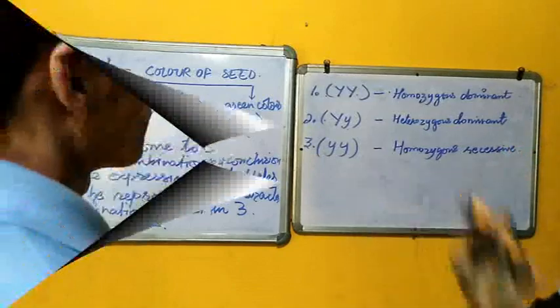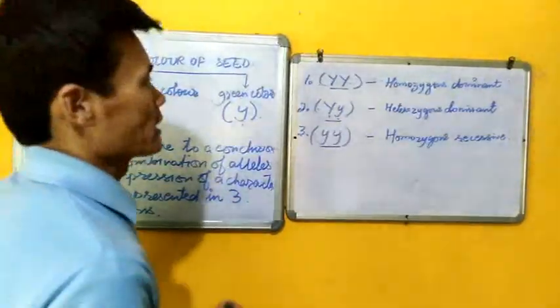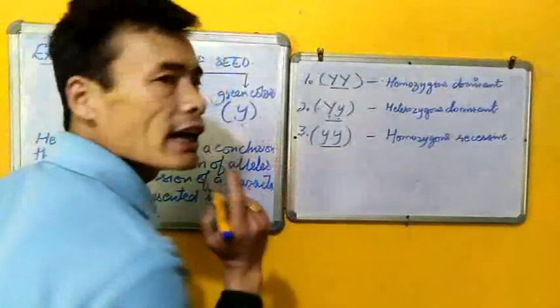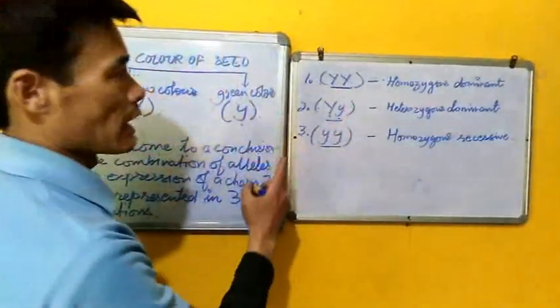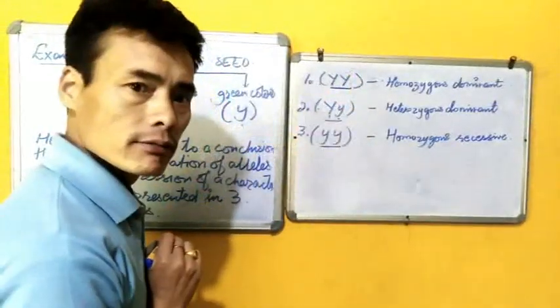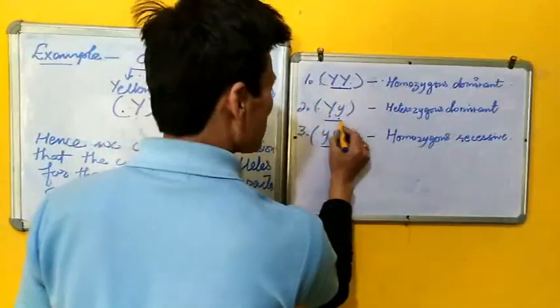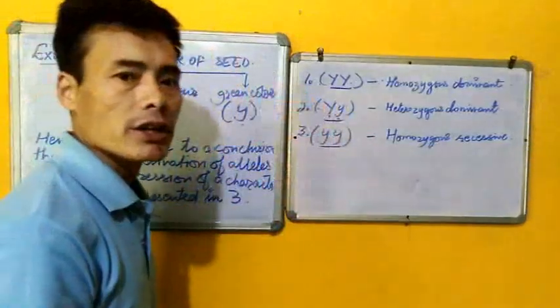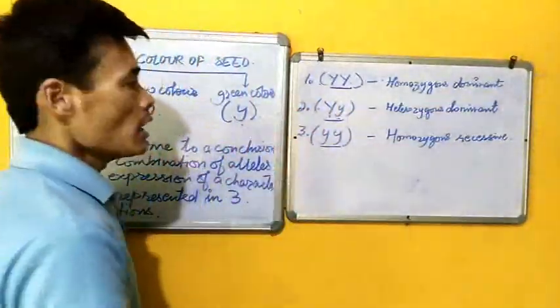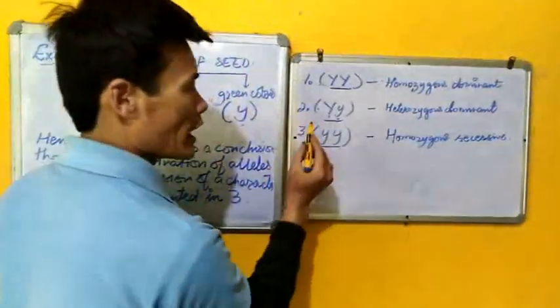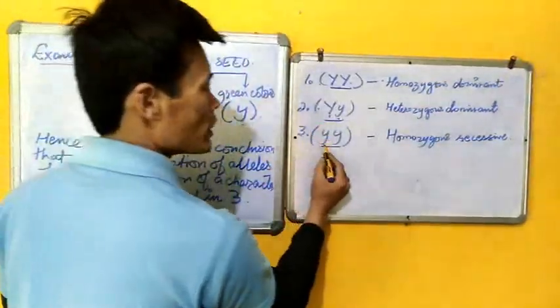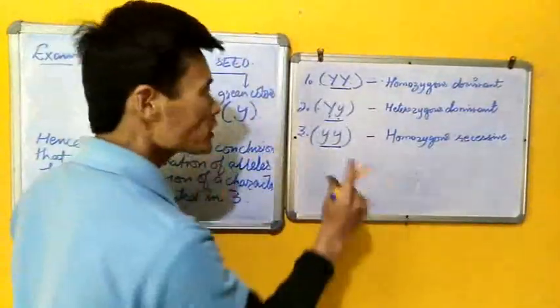Finally, we come to our conclusion that a dominant allele will be able to express itself in a homozygous condition as well as in a heterozygous condition. Whereas, a recessive allele will only be able to express itself in a homozygous condition, but not in a heterozygous condition. Thank you.